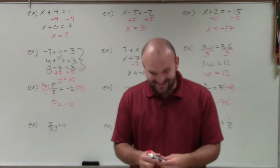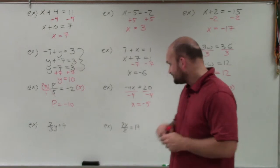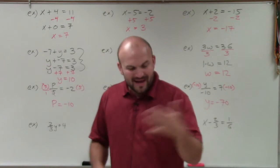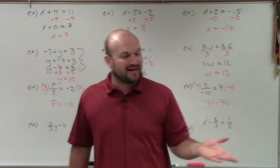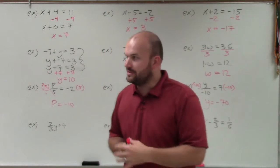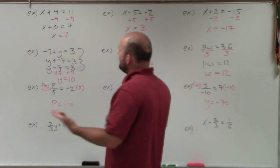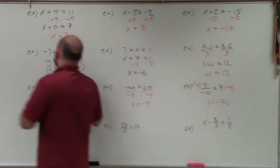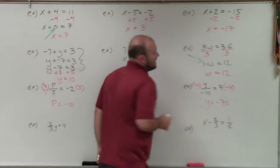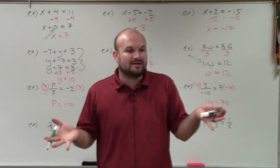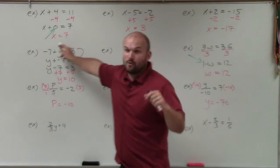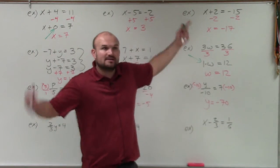Now let's get into fractions — the good stuff! The main important thing we're trying to do is get our variable to either add or subtract to 0, or be multiplied or divided by 1 — that's really the core of one-step equations. So if we have fractions, we want to get rid of them. This is 2/3 times y. How do you undo multiplication? You divide. But to avoid dealing with dividing fractions, the best way is to multiply by the reciprocal — the number that makes the fraction equal to 1.